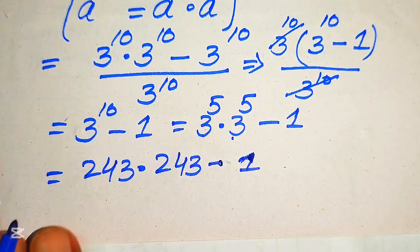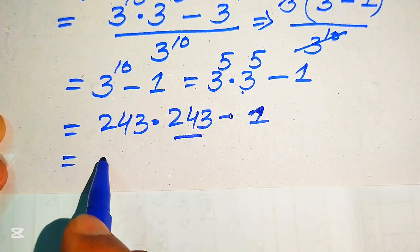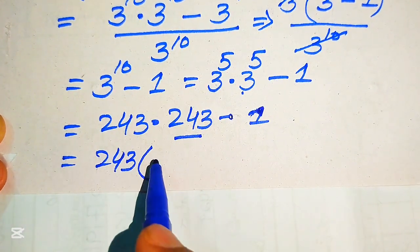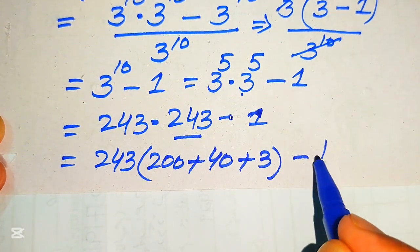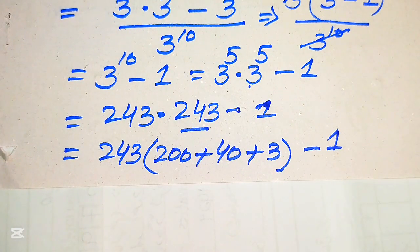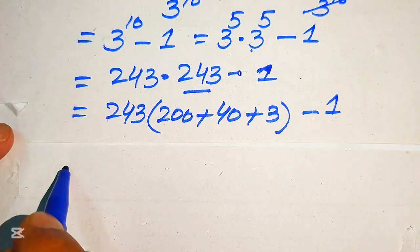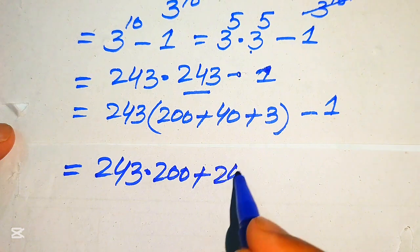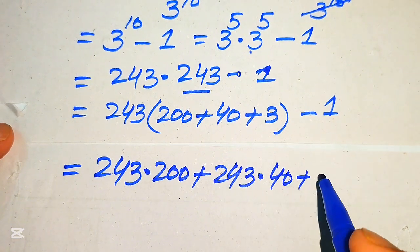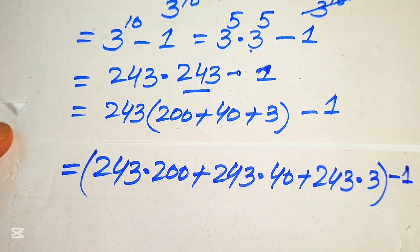We need more simplification. We multiply the two terms: 243 multiplied by 243, minus 1. We break 243 as 200 plus 40 plus 3, so it becomes 243 multiplied by 200, plus 243 multiplied by 40, plus 243 multiplied by 3, and at the last we subtract 1. In the next step we carry out each multiplication.